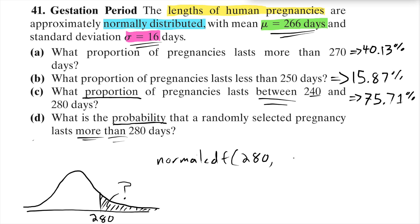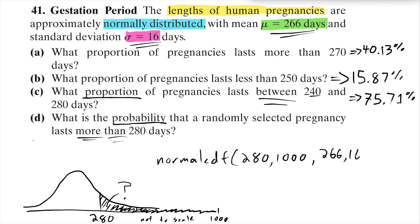I want to keep calculating this area until I get to the upper value, which I'll put in as 1000. It's the same mean and the same standard deviation. We get 0.1908 — 19.08 percent.